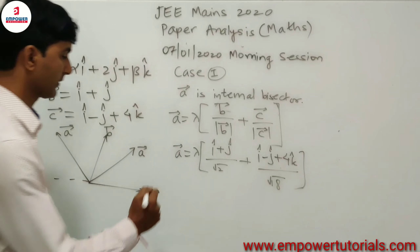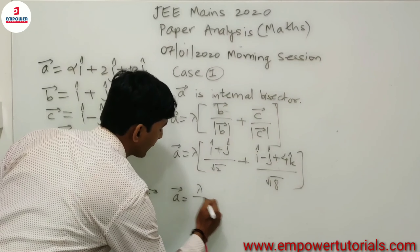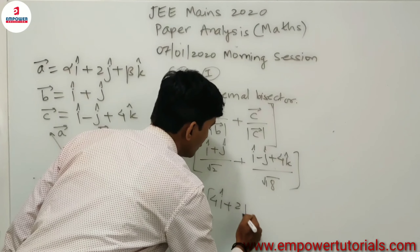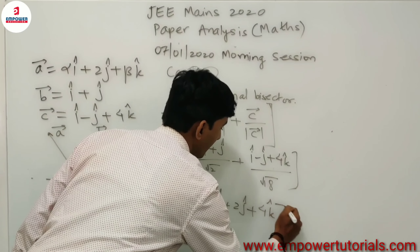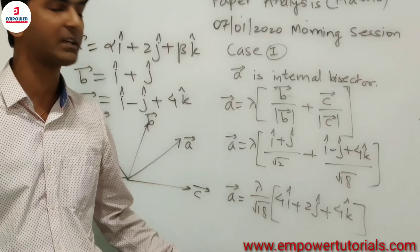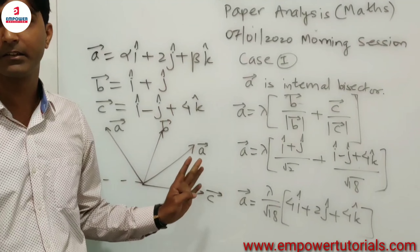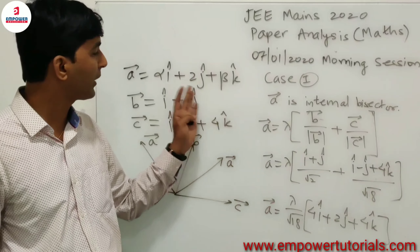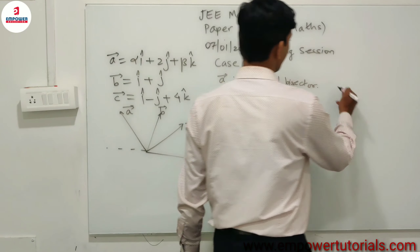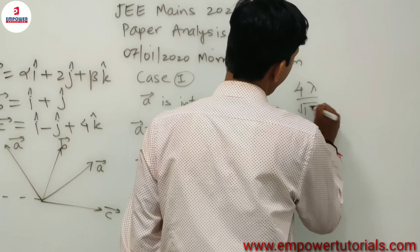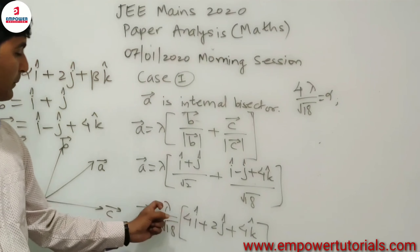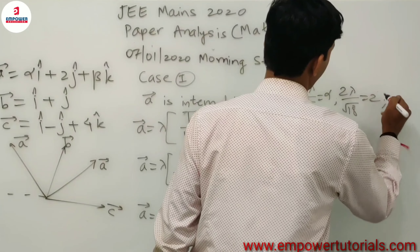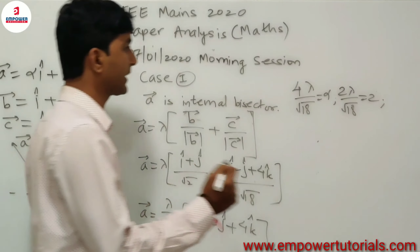Simplifying, we get **a** = (λ/√18)·(4î + 2ĵ + 4k̂). Since **a** is also expressed as α·î + 2ĵ + β·k̂, we compare components and get: 4λ/√18 = α, 2λ/√18 = 2, and 4λ/√18 = β.